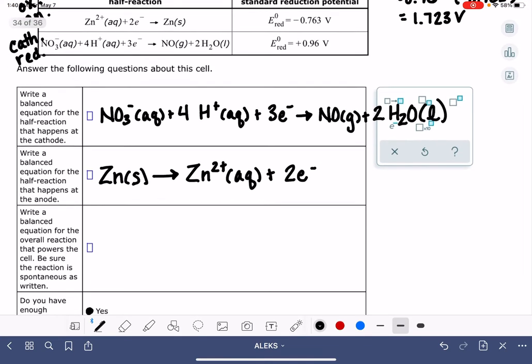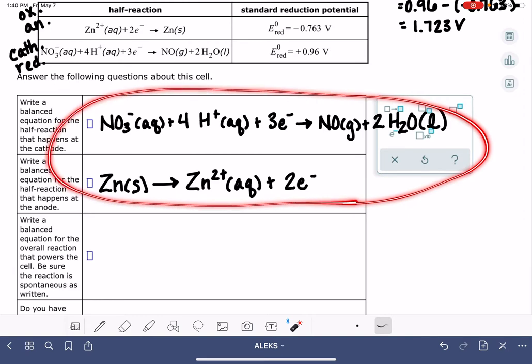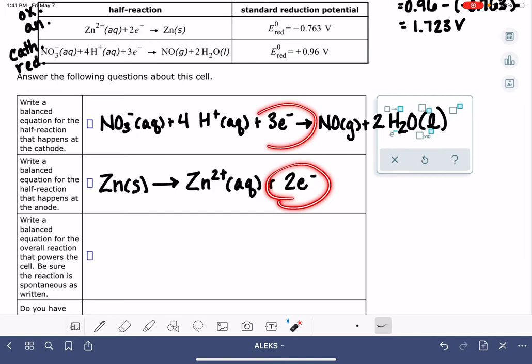Then last, we need to write an overall equation. So that means we're going to take these two half reactions and combine them together the same way that you would do when you're balancing an equation. Now, when we're balancing an equation, we need to make sure we have the same number of electrons in both of these half reactions. And right now we don't. We have two electrons in one and three electrons in the other, which means that we're going to need to multiply all of the stoichiometric coefficients until we get the same number of electrons for each.